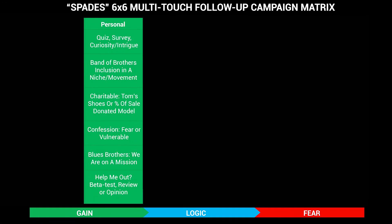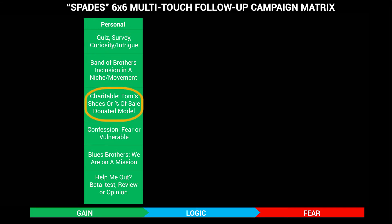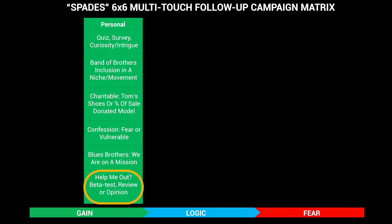Then you go to personal. Quizzes, surveys, curiosity — we found those are very effective on the front end for generating interest. Then inclusion in a niche or movements, charitable things like Tom's Shoes — those are all personal. Confessions or some sort of vulnerability. The Blues Brothers — 'we're on a mission from God.' Or 'hey, help me out.' So those are the gain messages.